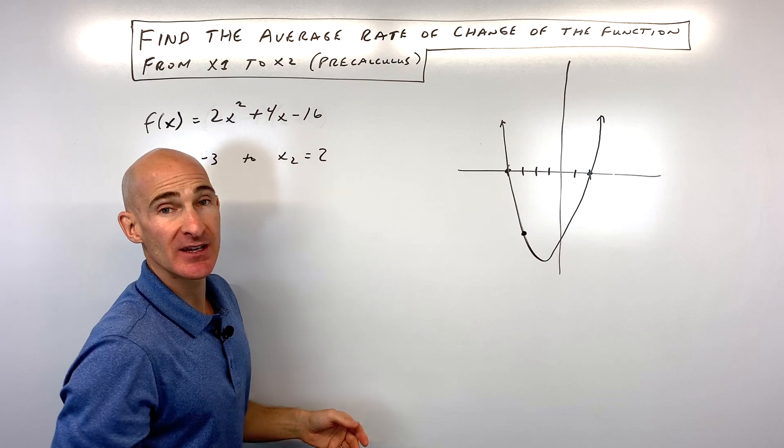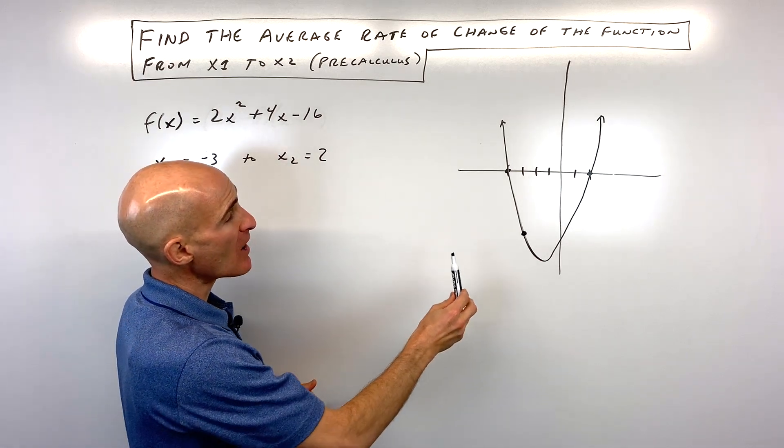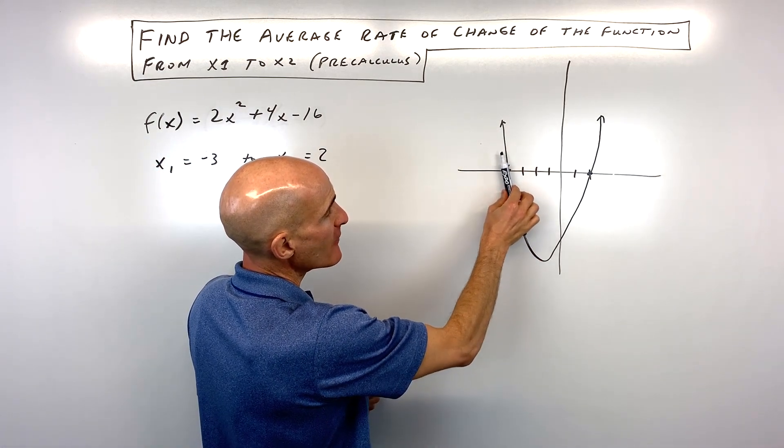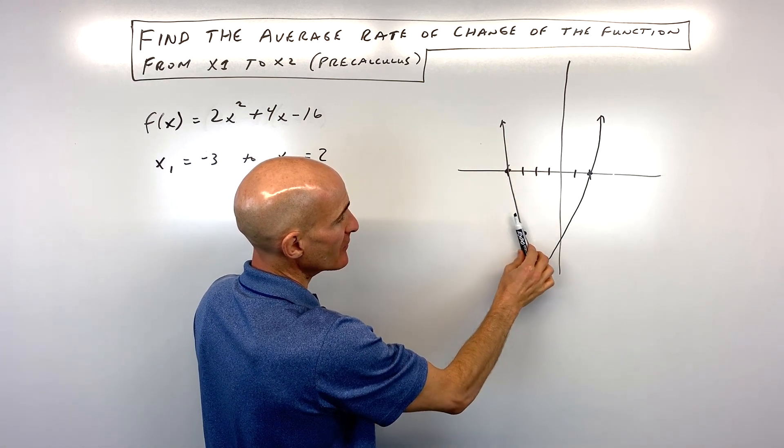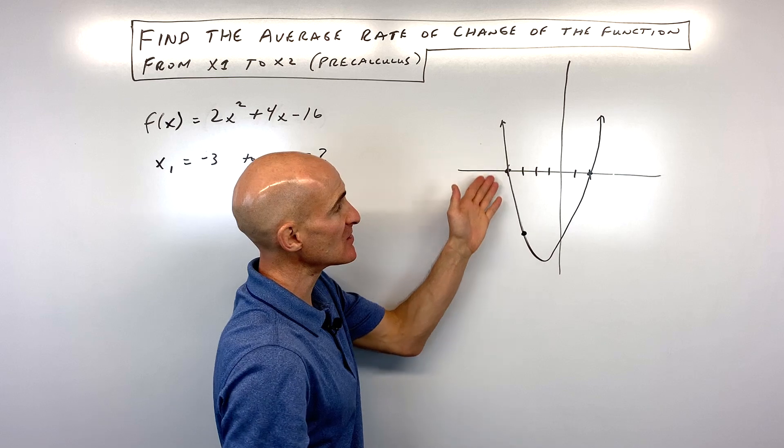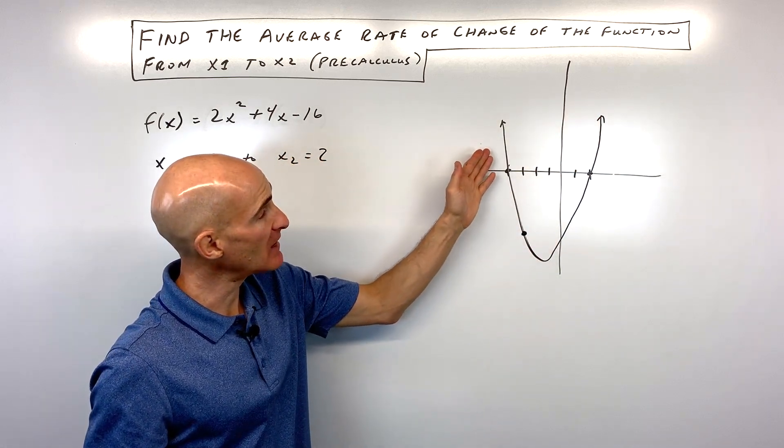I graphed this particular function just to illustrate—you don't have to do this for these problems—but to show you. For example, here the slope is negative, here it's zero, here it's positive. You can see that the slope is constantly changing depending on where you're at on this particular graph.